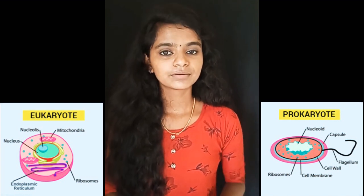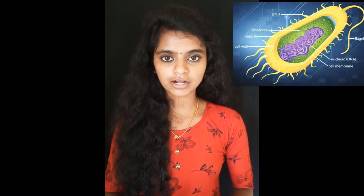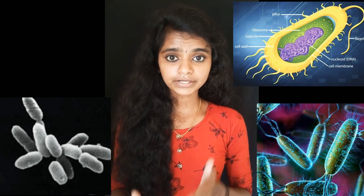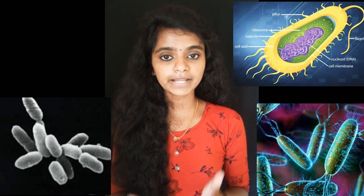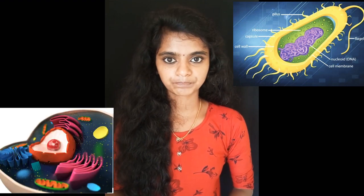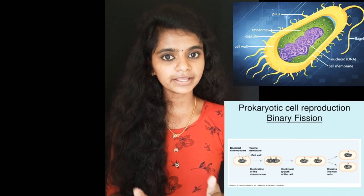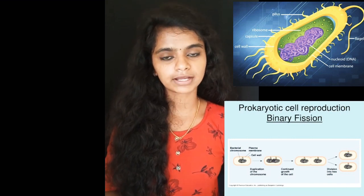Let's look at the prokaryotic cell in detail. The word 'pro' means before and 'karyotes' means nucleus, hence it has no defined nucleus. Organisms with prokaryotic cells are known as prokaryotes. Prokaryotes are unicellular organisms and they are divided into two domains: archaea and bacteria. Organisms with nuclei and other organelles are placed in the third domain, that is eukaryotes. The first organisms are thought to have been prokaryotes. Prokaryotes reproduce asexually, usually by binary fission, that is without the fusion of gametes.